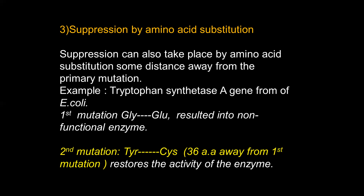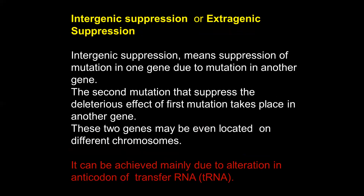These are the three examples of intragenic suppression — the second mutation takes place in the same gene, either in the same codon (intracodon), by reading frame restoration, or by amino acid substitution. The second type of genetic suppression is called intergenic suppression or extragenic suppression, which will be discussed in the next presentation.